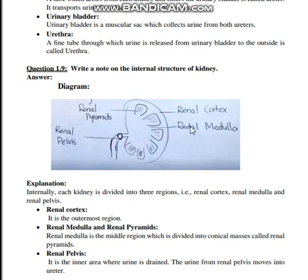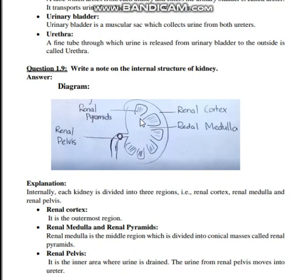Internally, each kidney is divided into three regions: renal cortex, renal medulla, and renal pelvis. The renal cortex is the outermost region. The renal medulla is the middle region, divided into conical masses called renal pyramids, which consist of small ducts that transport the urine to the renal pelvis.